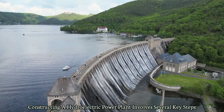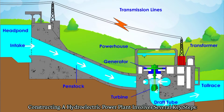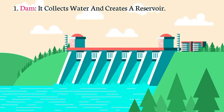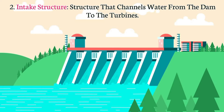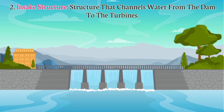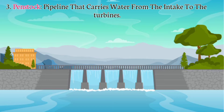Constructing a hydroelectric power plant involves several key steps. Number 1: Dam — it collects water and creates a reservoir. Number 2: Intake Structure — a structure that channels water from the dam to the turbine. Number 3: Penstock — a pipeline that carries water from the intake to the turbine.